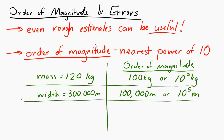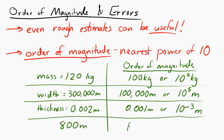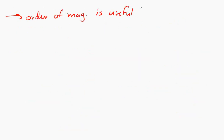If something has a thickness of 0.002 meters, the order of magnitude is 0.001, or 10 to the minus 3 meters. If you have 800 meters, the nearest power of 10 is 10 to the 3 meters. Physicists will often use the order of magnitude when we're not sure about the size of something, but we want a very rough estimate.